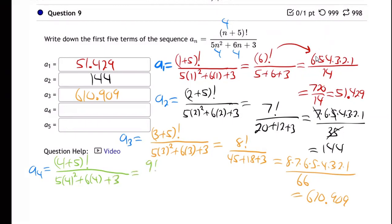...equals 9 factorial over 20, 80, 24 plus 24 plus 3 - which is 9 times 8 times 7 times 6 times 5 times 4 times 3 times 2 times 1, all over 107. Hit the buttons on your calculator. I'm getting 3391.402.